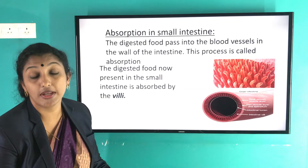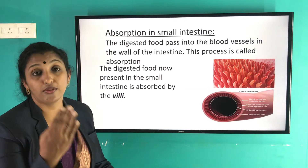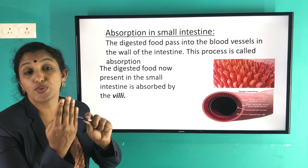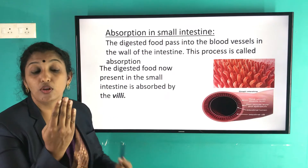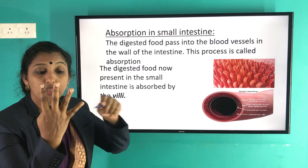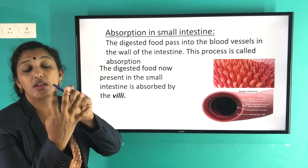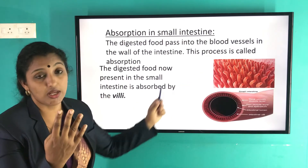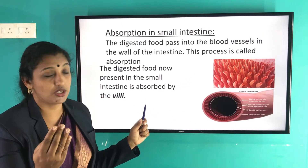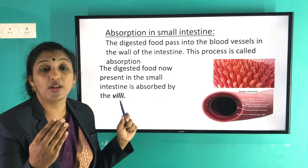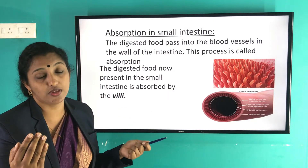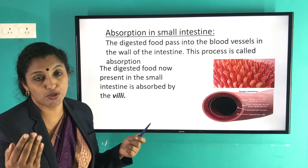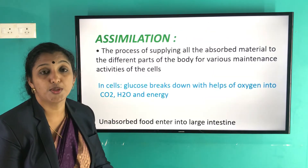The villi are rich in blood vessels. If we hold our fingers together, the surface area is very less, but if we spread them apart, the surface area increases. The same thing happens with the villi — these finger-like projections increase the surface area and help with more absorption of nutrients.